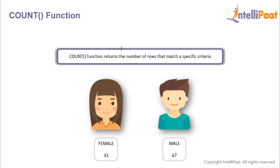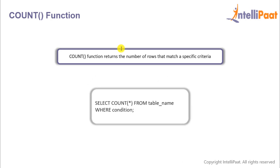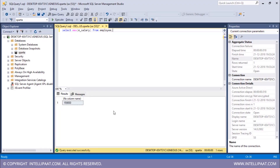Then there's the count function. The count function returns the number of rows that match a specified criteria. For example, if we wanted to find out the number of male and female employees in a company, we can use the count function. After the select keyword, you use the count function with an asterisk inside the parenthesis, then the table name, and finally a where clause to give the condition.